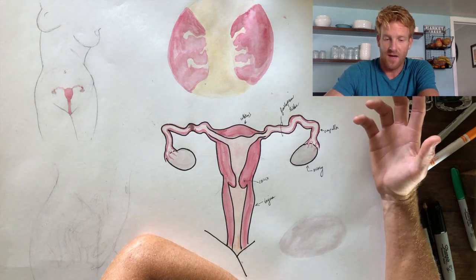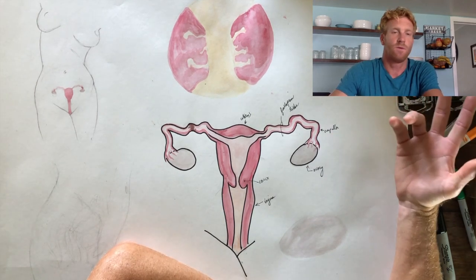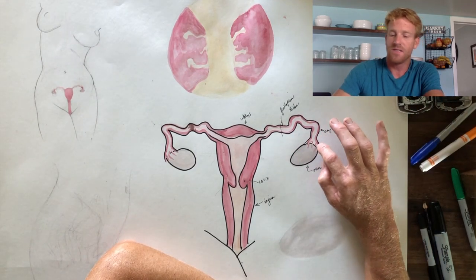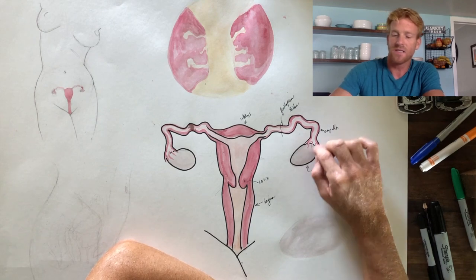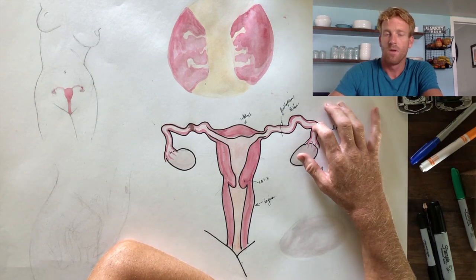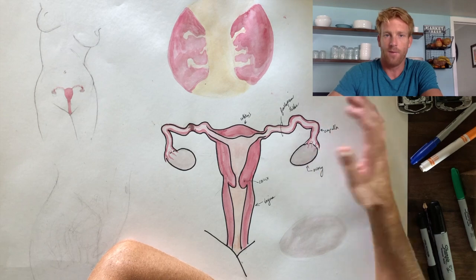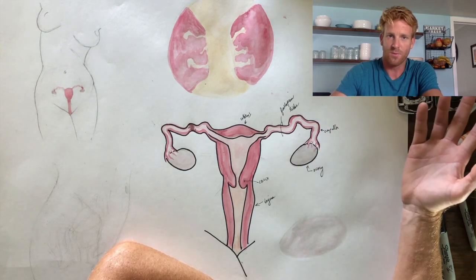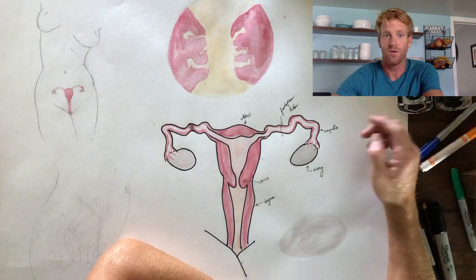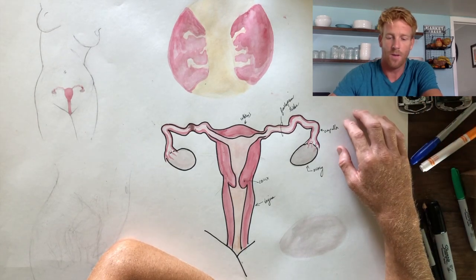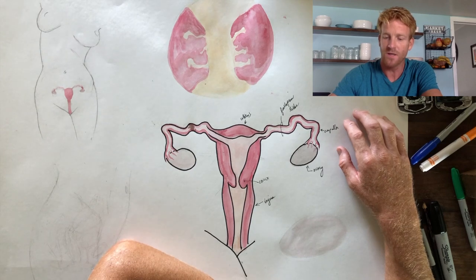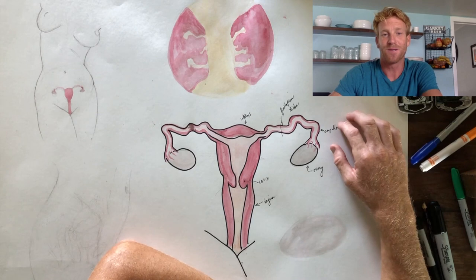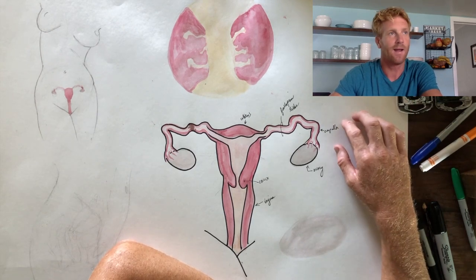Now in other species of animals, like dogs and many other mammals, there is a direct connection between the fallopian tube and the ovary, meaning every egg that's released gets captured by the fallopian tube. One big difference between a mammal like a dog and a human is that dogs have obviously a lot more offspring — they have litters. It's thought that the lack of a direct connection in humans is an evolutionary adaptation to prevent large litters, because we obviously can't handle that.